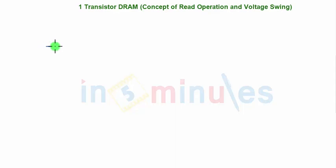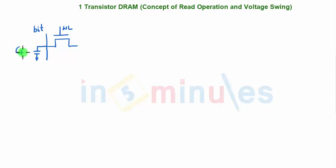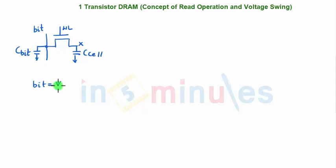In the previous clip we saw a one-transistor DRAM where this was the word line, this was the bit line (some authors call it the data line), this was C_bit. We saw that the value of C_bit is very high, this is C_cell, and this was node X. For the read operation, we need to make the bit line equal to VDD/2 irrespective of whether we are reading a 1 or a 0.